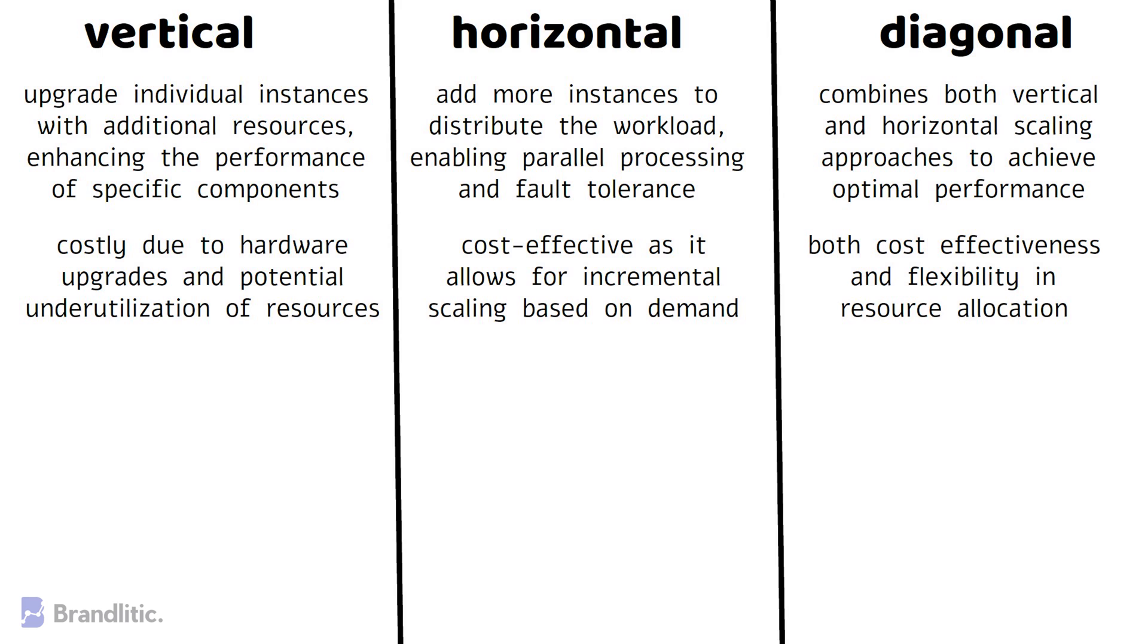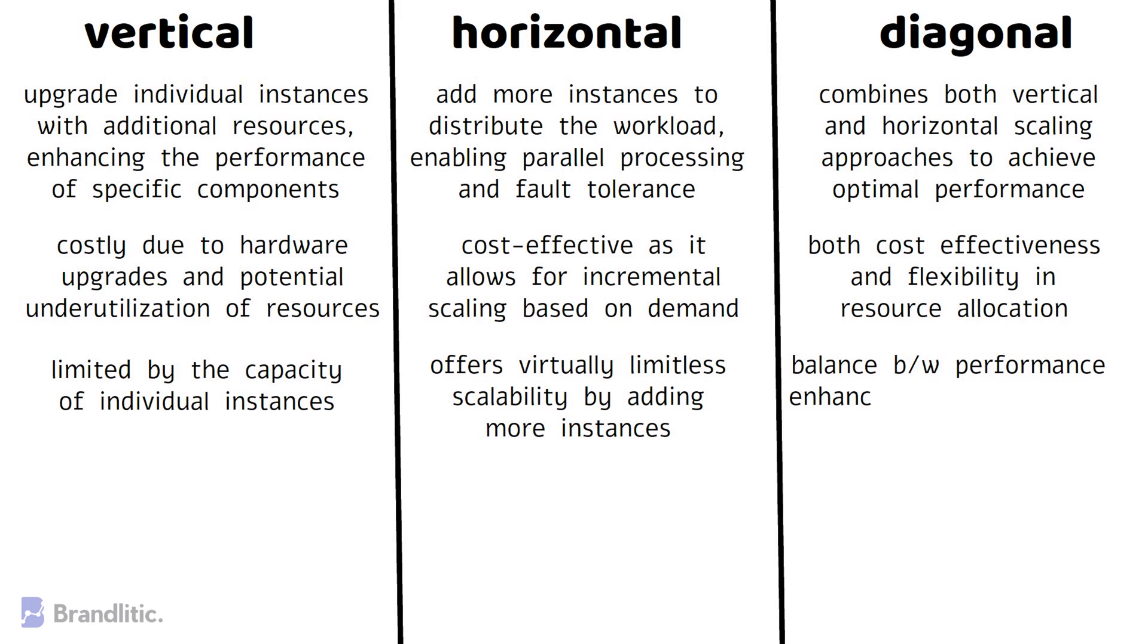Vertical scalability is limited by the capacity of individual instances, while horizontal scalability offers virtually limitless scalability by adding more instances. In contrast, diagonal scalability strikes a balance between performance enhancement and increased instance count.